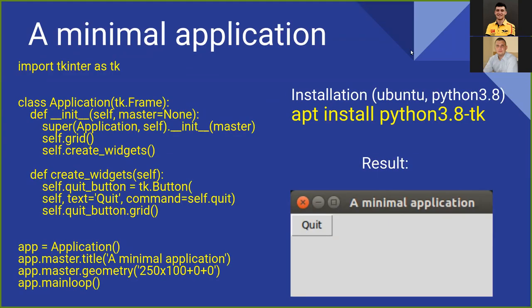Let's take a look at a minimal application. I used Ubuntu and Python 3.8 for this sample. To make it work I needed just one package: python3.8-tk. It's very simple — a small window with standard controls, a minimal application title, and a quit button. If you click that button the window will be closed and the application will finish its work. Let's take a look at the code. We import the tkinter module and rename it to tk. Our application class extends the tkinter Frame class and receives all its functionality.